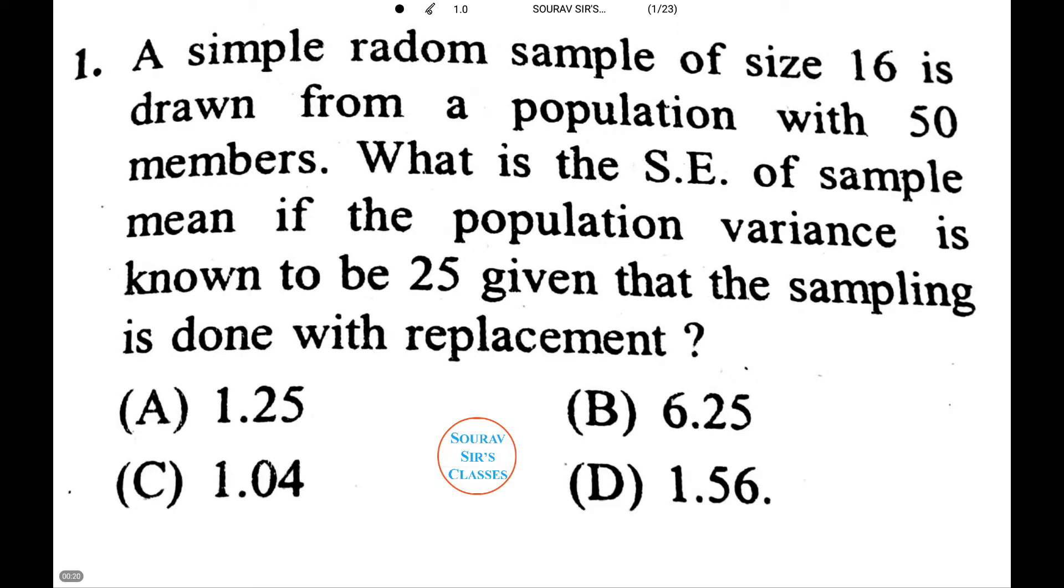In the first question, we have a simple random sample of size 16 drawn from a population with 50 members. What is the standard error of sample mean if the population variance is known to be 25, given that the sampling is done with replacement? Let's see how to do this.